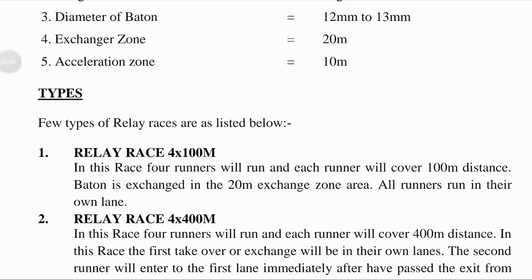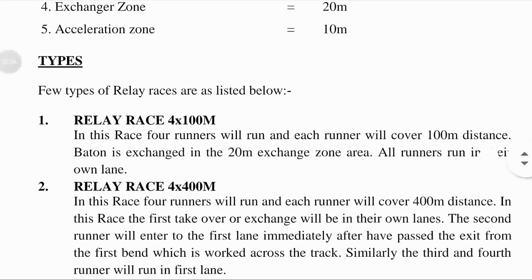The exchange zone is the area in which the baton must be passed from one runner to another during a relay race, and it is equal to 20 meters. The acceleration zone, also known as the pre-exchange zone, is the section of the track leading up to the changeover zone which allows the athlete receiving the baton to start and pick up speed; it is equal to 10 meters.